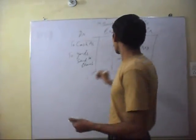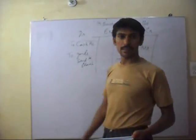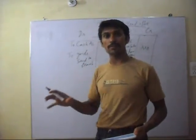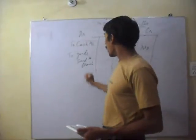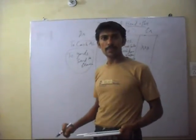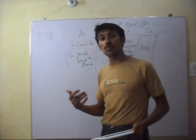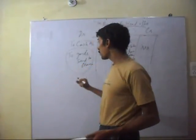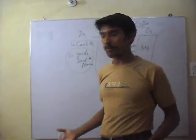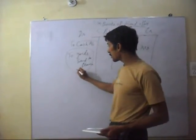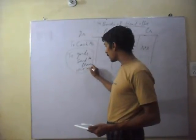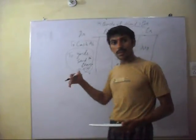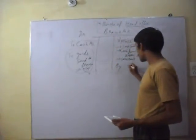The branch account is also an income statement — it tells us the net profit from the branch. So if we send goods to the branch at cost plus some margin or profit, then we have to adjust the profit reserve. Suppose we send goods at cost plus ten percent margin, then we cut this margin by passing an entry on the credit side.